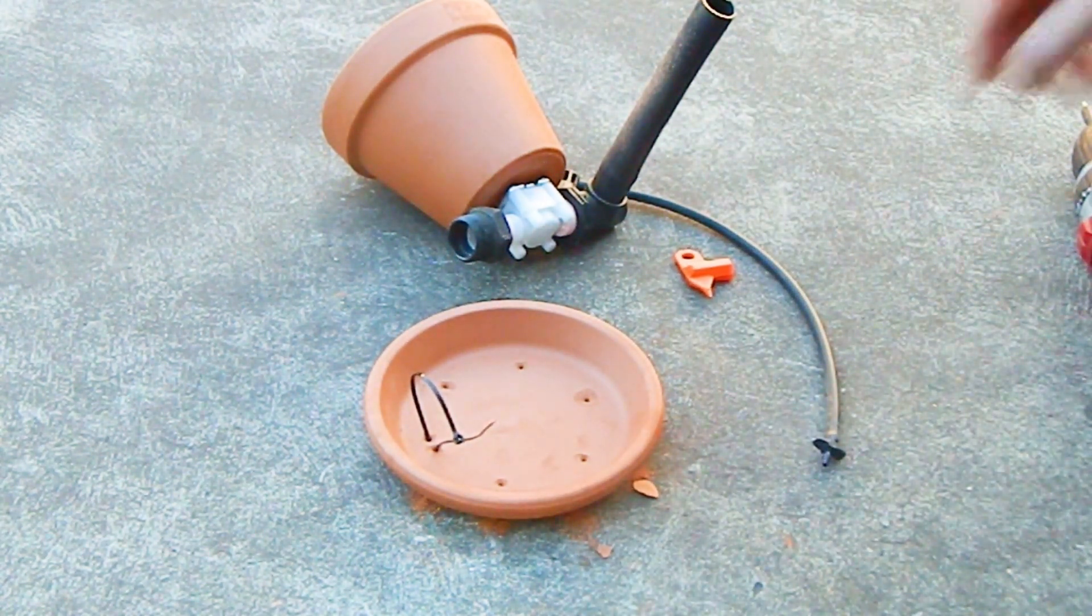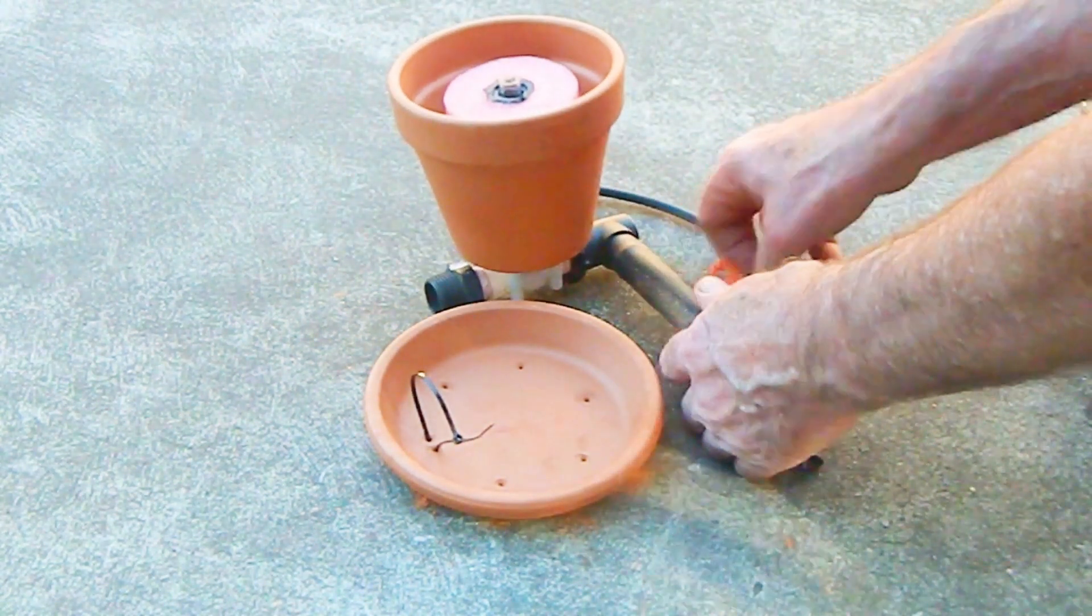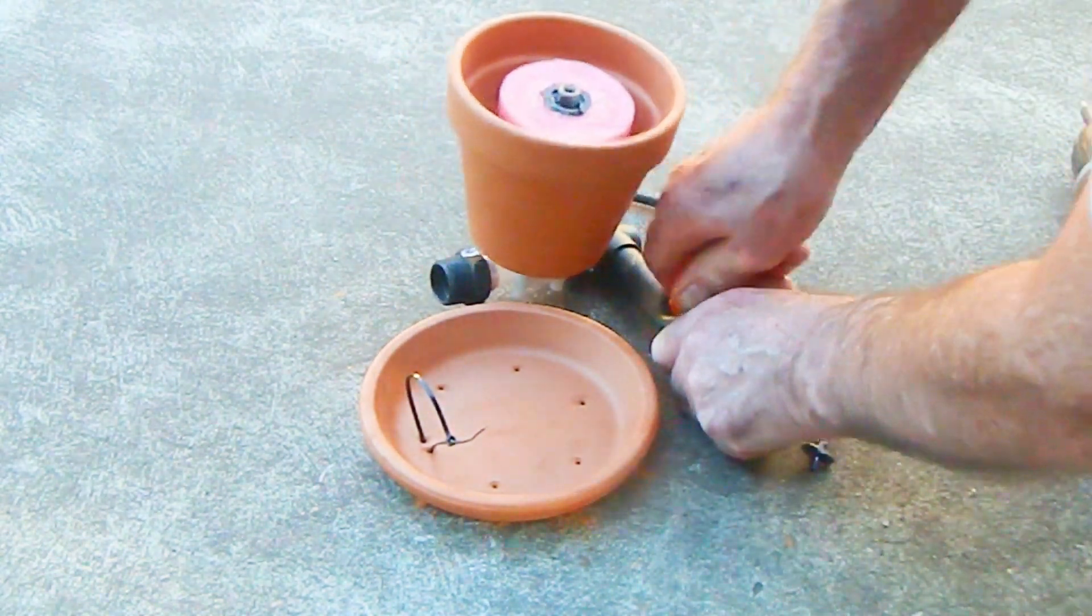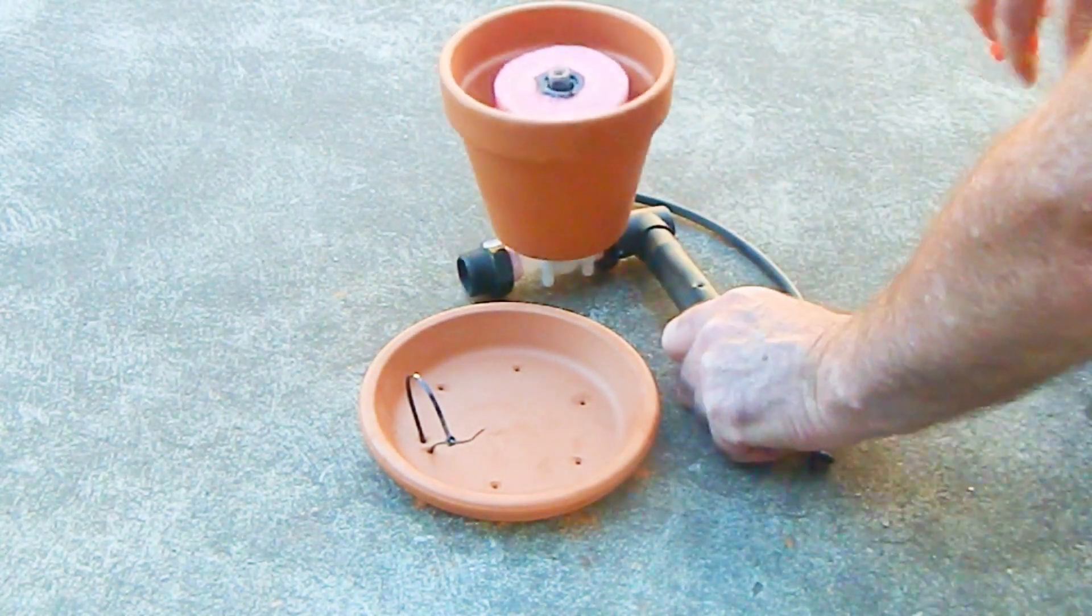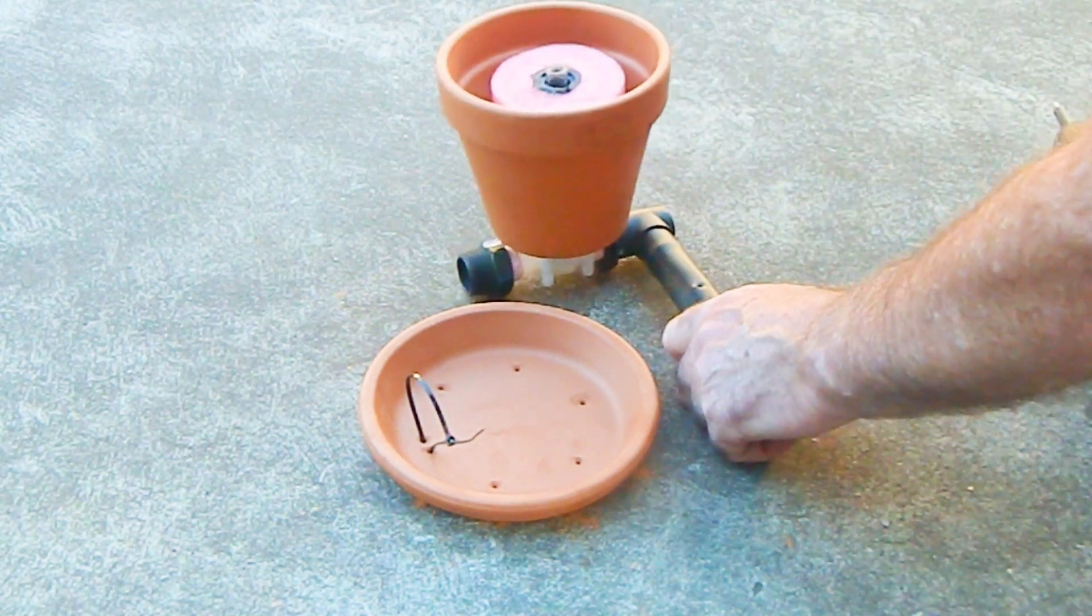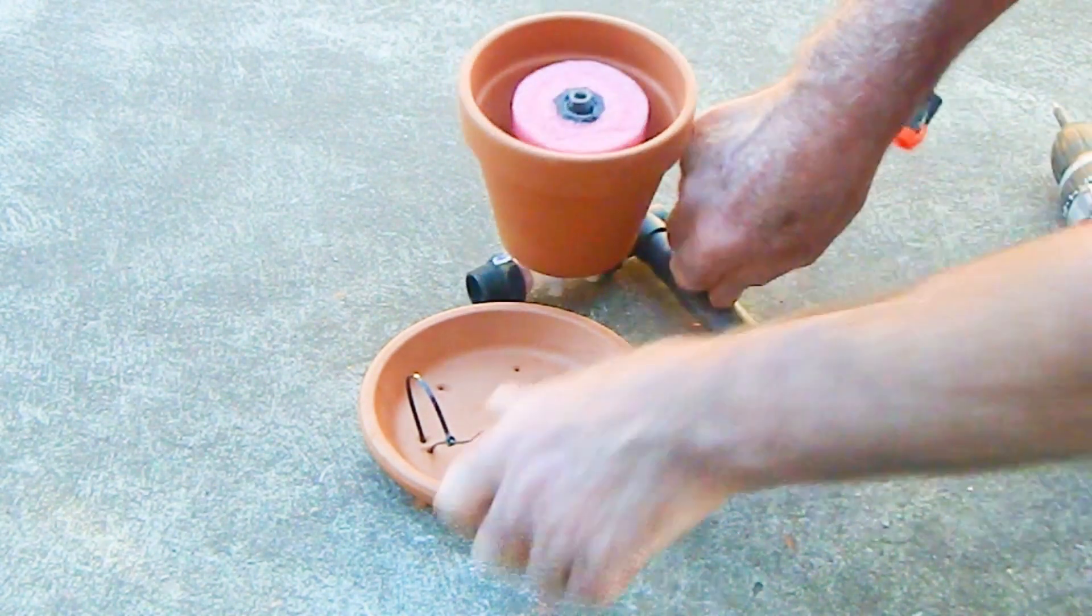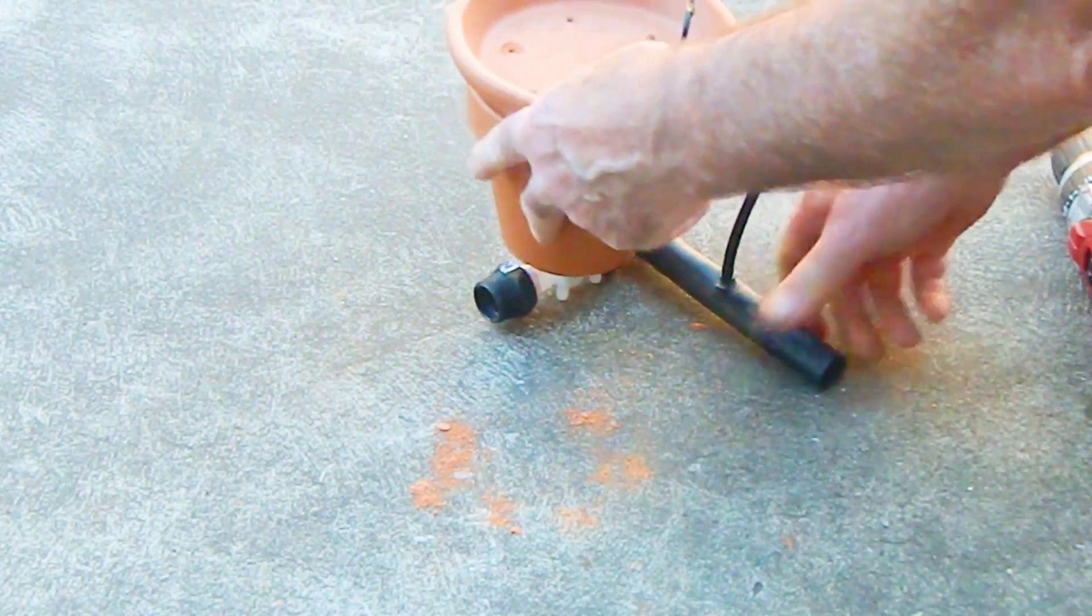Attach one end of the 4mm poly pipe to the adjustable dripper and attach the other end to the takeoff adapter. Punch a hole in the 19mm poly pipe and insert the takeoff adapter. Use the cable tie to secure the adjustable dripper.